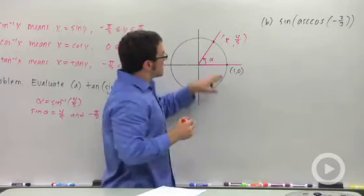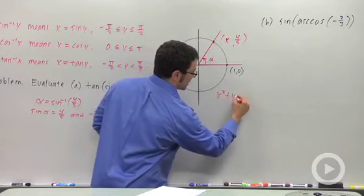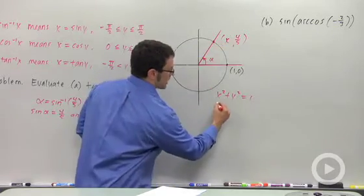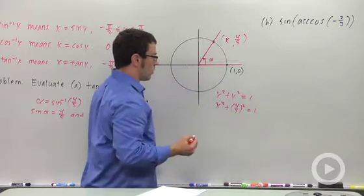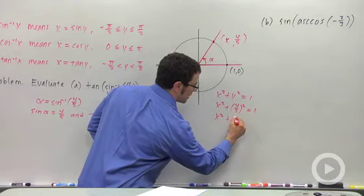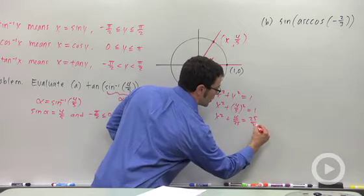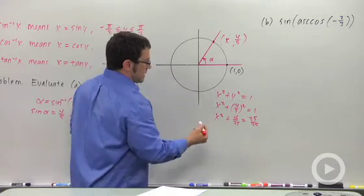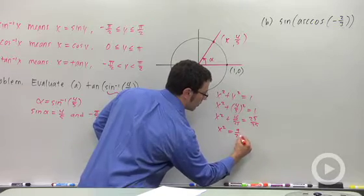But remember, this is a point in the unit circle. And on the unit circle, x squared plus y squared equals 1. So in this case, we'd have x squared plus 4 fifths squared equals 1. Or x squared plus 16 over 25 equals, and I'll change this to 25 over 25. And then I subtract 16 over 25 from both sides and I get x squared equals 9 over 25.